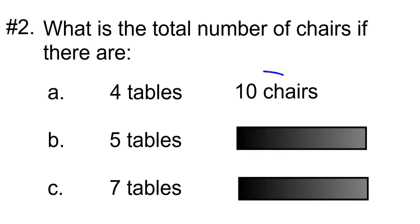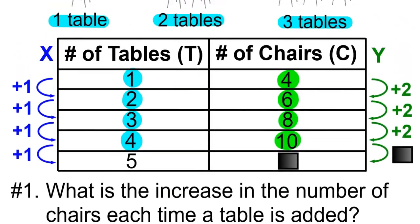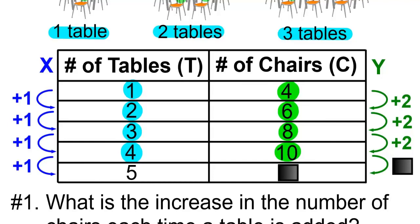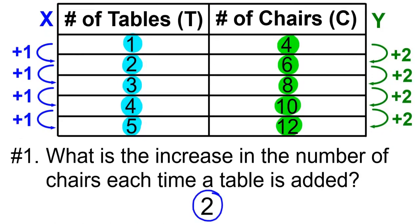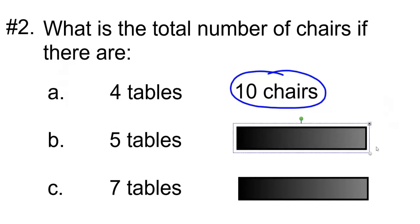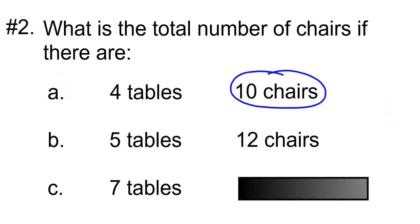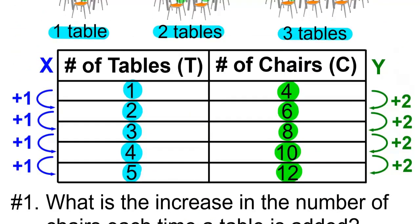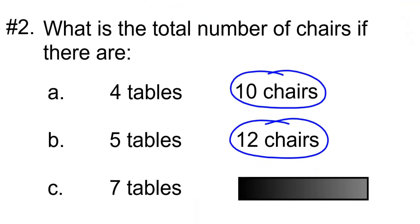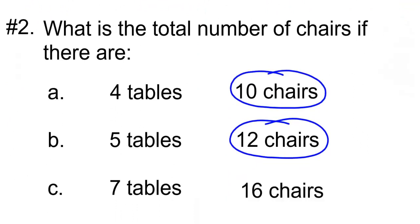What is the total number of chairs if there are five tables? If we add one more table, we're going to add two more chairs, and ten plus two is equal to twelve. So for five tables, we will have twelve chairs. What is the total number of chairs if there are seven tables? If there were to be six tables, we would add two chairs and have fourteen chairs. So seven tables would be two more than fourteen, which is sixteen chairs.